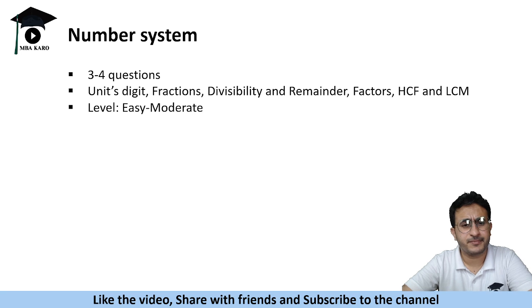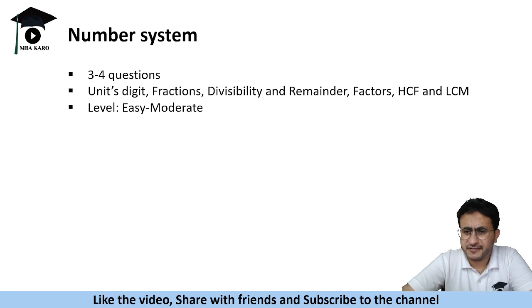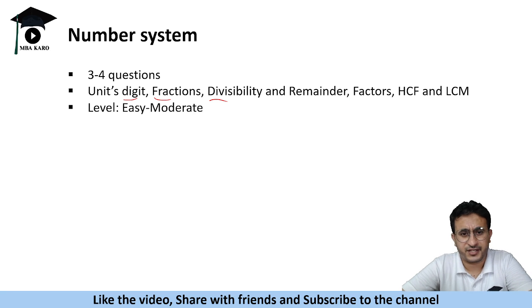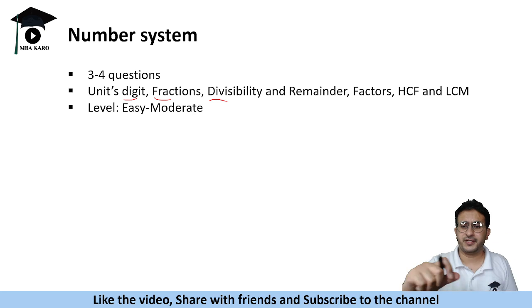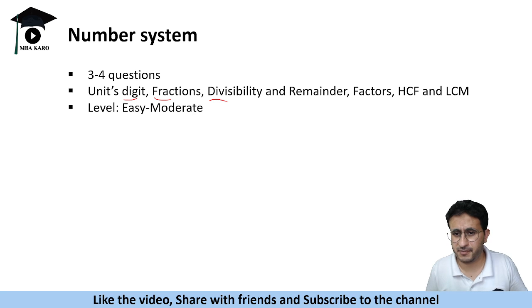Then comes number system. Number system also has three to four questions in NMAT. The level is usually easy to moderate. You get questions on units digit, fractions, divisibility and remainder, factors, HCF and LCM. These are the different topics which are tested in the number system. And you might get like which of the following fractions is the lowest or some numbers raised to some powers. You need to tell which is the highest or lowest. You might be asked to find the units digit of some number. Divisibility based questions, if the number is divisible by 24, what are the values of A and B. Factors based question, finding the number of factors, HCF and LCM. These are the topics which are holistically covered. Three to four questions on number system as well.